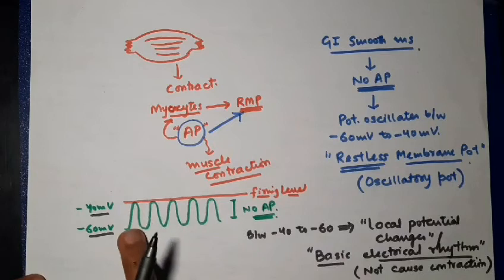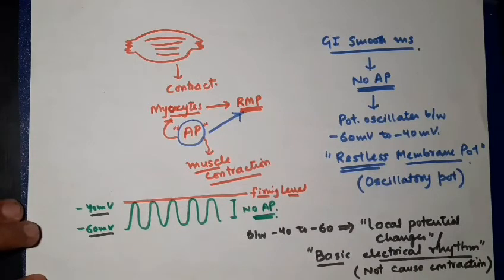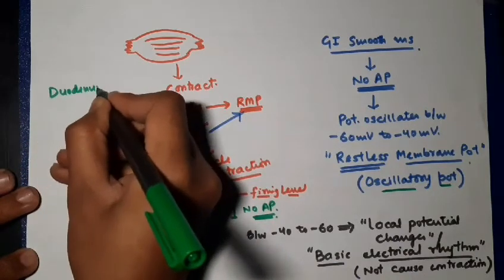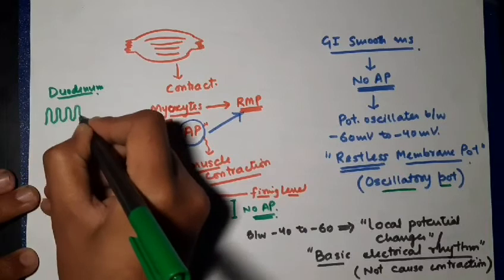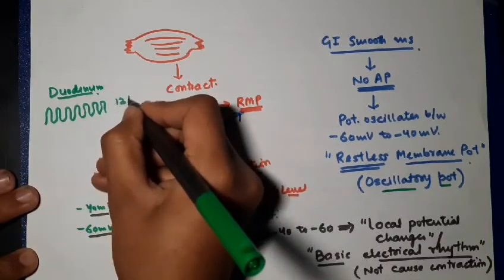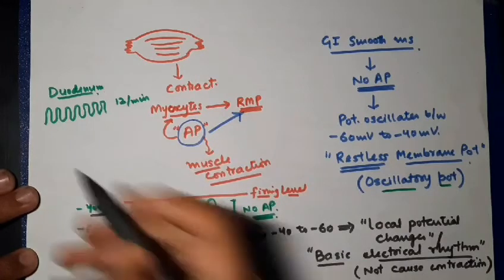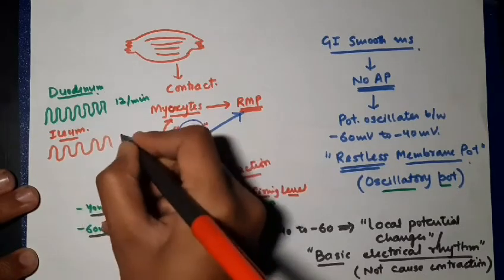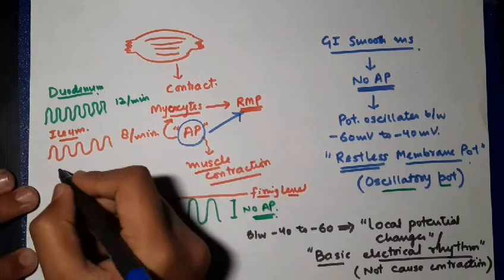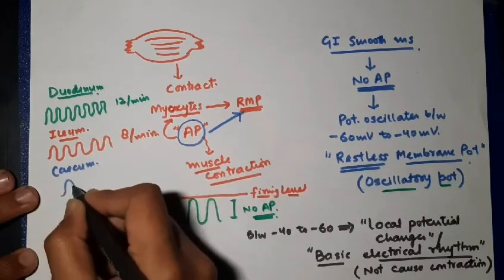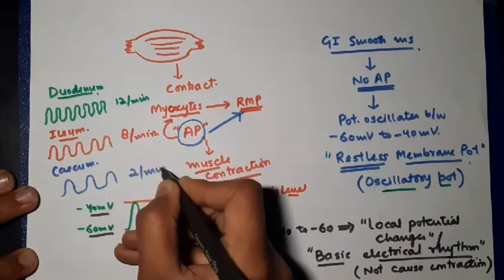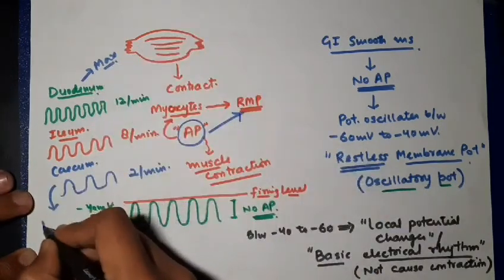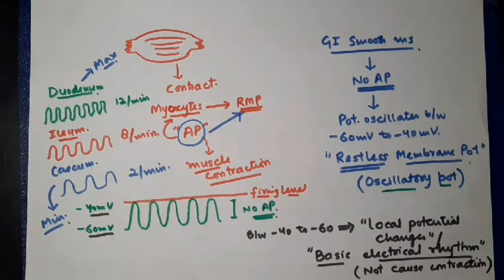The number of oscillations in the basic electrical rhythm varies in different parts of the GIT. In the duodenum, the maximum oscillations are seen — around 12 oscillations per minute. In the ileum, the number is a bit less, almost 8 oscillations per minute. The minimum number of oscillations is seen in the cecum, with almost 2 oscillations per minute. So the duodenum shows maximum oscillations and the cecum shows minimum oscillations in basic electrical rhythm.